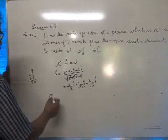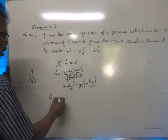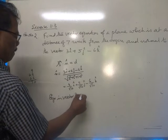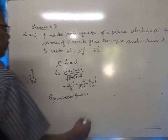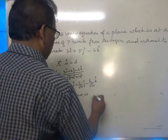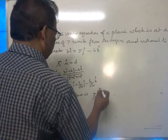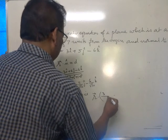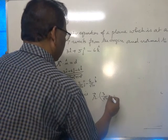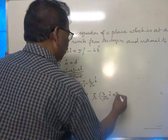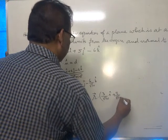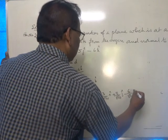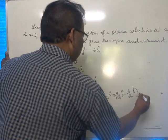Now equation in vector form. r dot 3 by root 70 i cap plus 5 by root 70 j cap minus 6 by root 70 k cap equals,